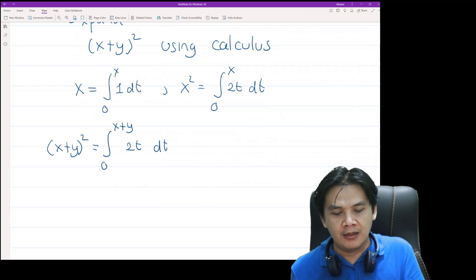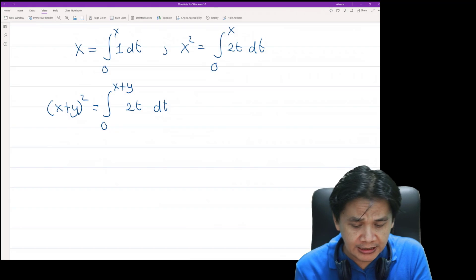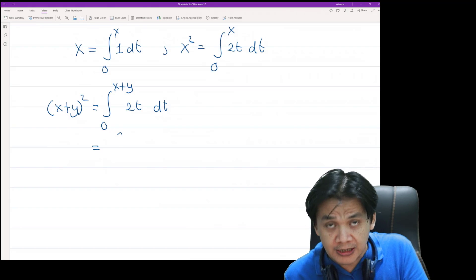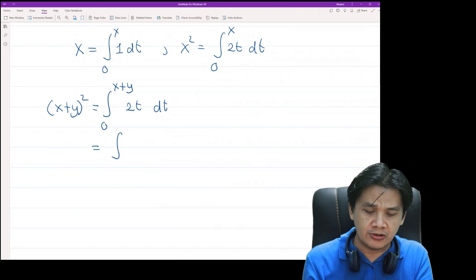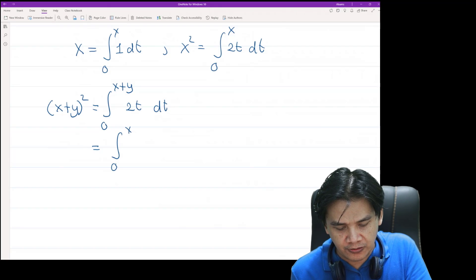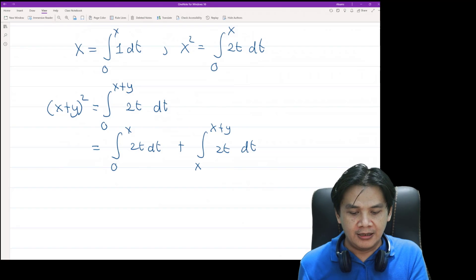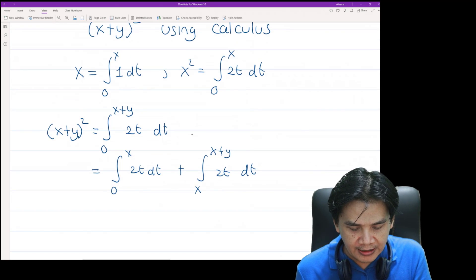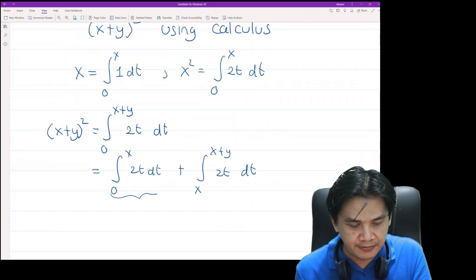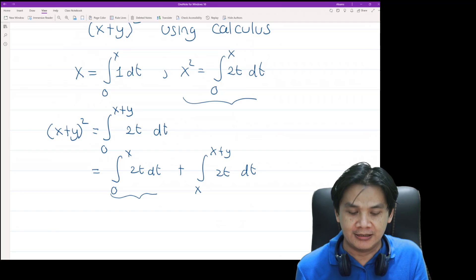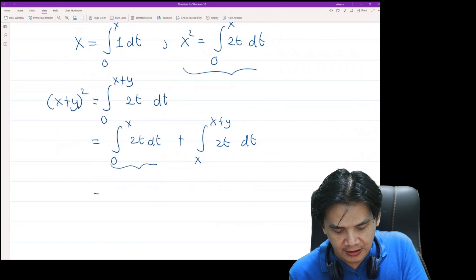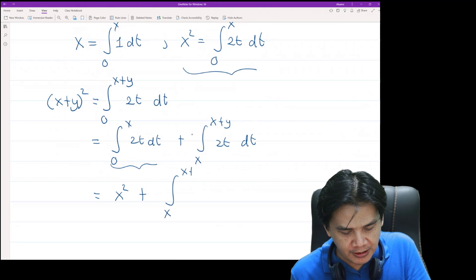Okay, now by the property of integration we can split this integral into two integrals, so from 0 to x of 2t dt plus from x to x plus y of 2t dt, right? Okay, now look at this first term, that's exactly x squared, right? This is x squared plus integral from x to x plus y of 2t dt.